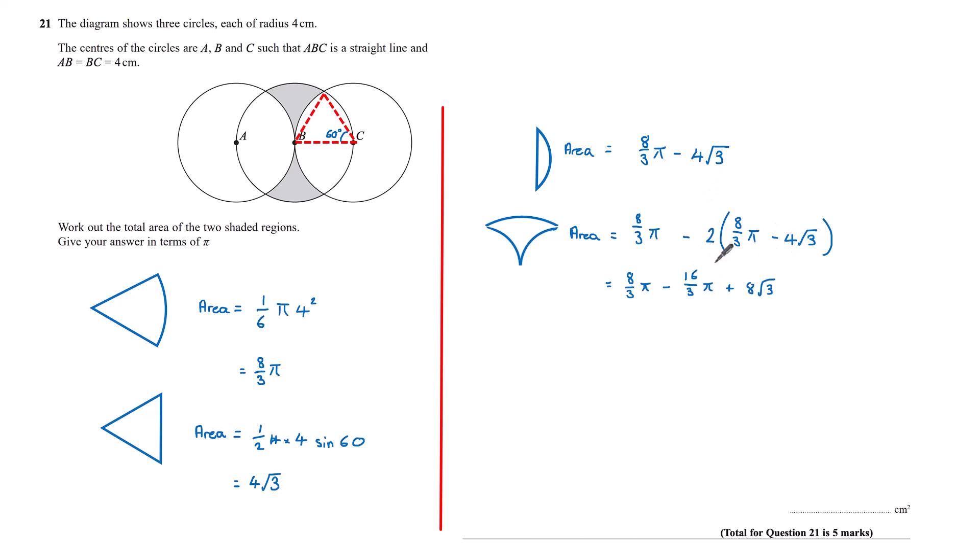Expanding the bracket here, that's the same as eight thirds pi minus 16 thirds pi minus two times minus four root three is plus eight root three. And this simplifies to give me eight root three minus eight thirds pi.